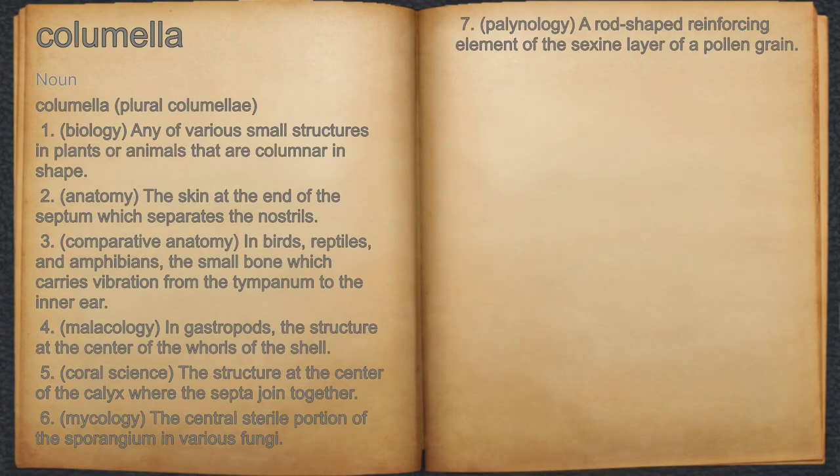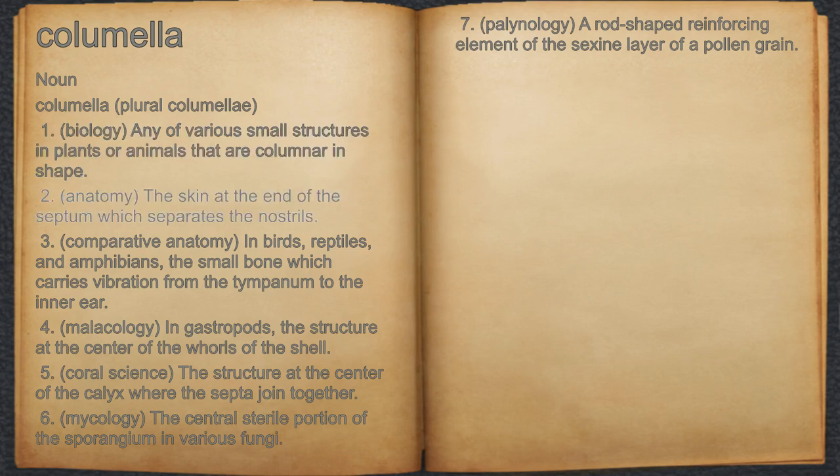Columella. Noun. 1. Biology: any of various small structures in plants or animals that are columnar in shape. 2. Anatomy: the skin at the end of the septum which separates the nostrils.